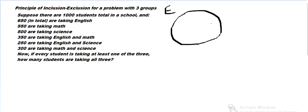So we've got English. There's 650 total in there. 550 total are taking Math. And 500 are taking Science in total.